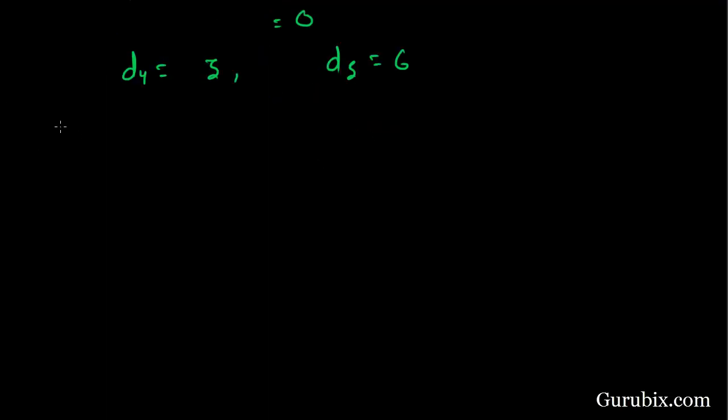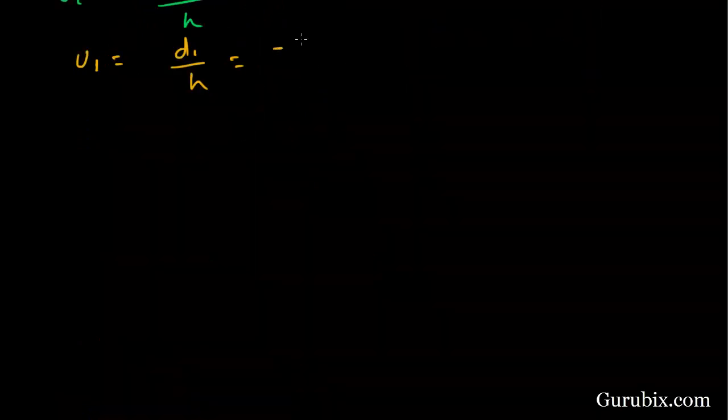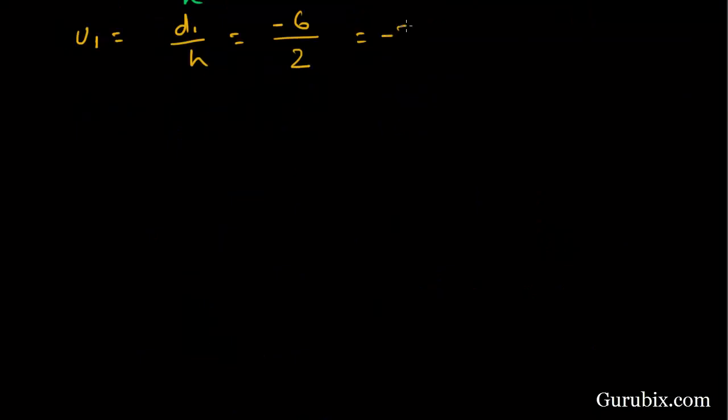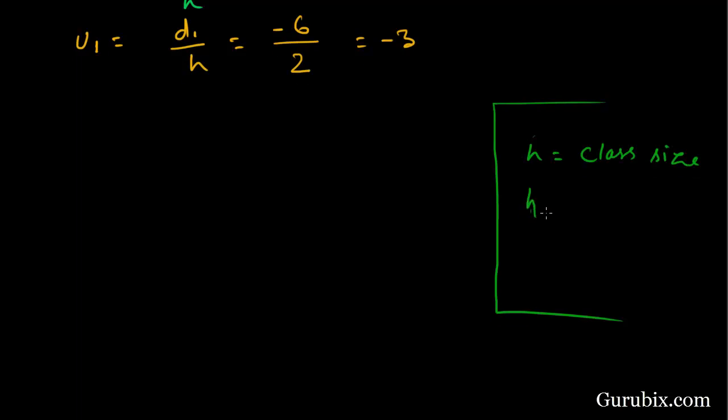Now, we have to find ui. ui is equal to di upon h, and u1 is equal to d1 upon h is equal to minus 6. Minus 6 upon our class size is 2, so ui is equal to minus 3. h is equal to class size where h is equal to upper limit minus lower limit. h is equal to 52 minus 50 is equal to 2.